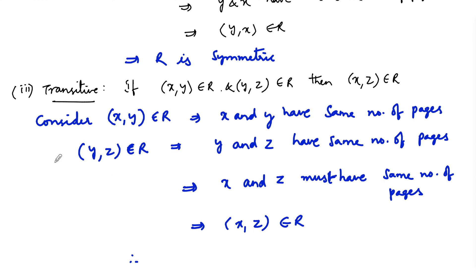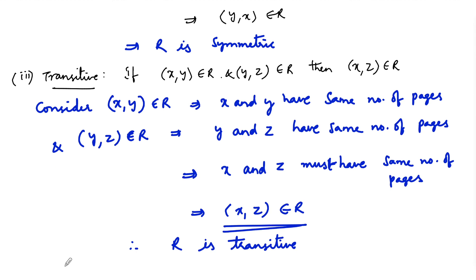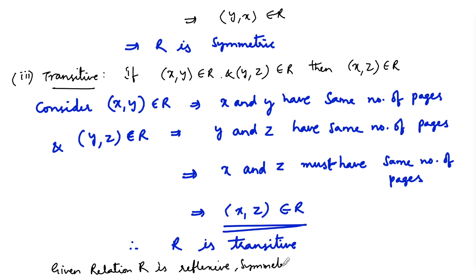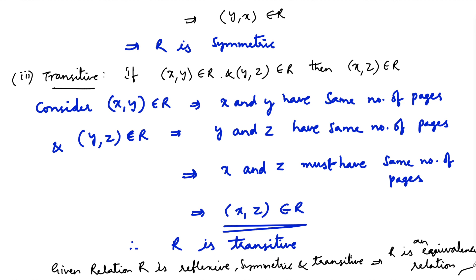Therefore, (x, z) must belong to the relation R because both are having the same number of pages. So, for (x, y) belongs to R and (y, z) belongs to R, (x, z) belongs to R — therefore, the relation R is transitive. We can conclude that the given relation R satisfies all three conditions: reflexive, symmetric, and transitive. If any relation satisfies these three conditions, we call it an equivalence relation. Therefore, R is an equivalence relation.